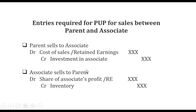If the associate sells to the parent, the parent pays for the goods and the inventory of the parent will have included the unrealized profit, so we credit inventory to subtract it. At the same time, we debit the share of associate's profit, since the associate has sold to the parent. Thank you and until next time.